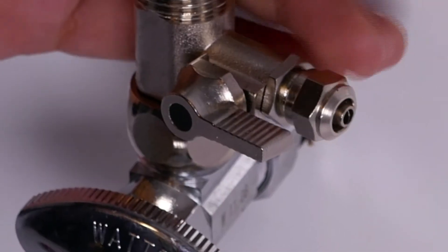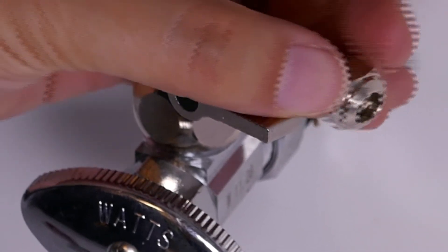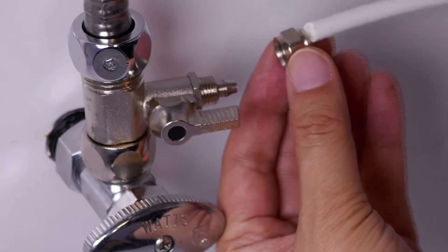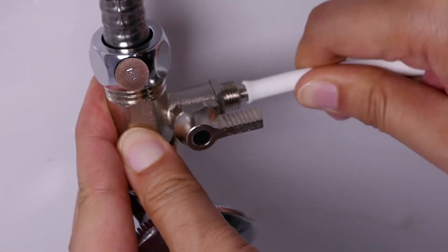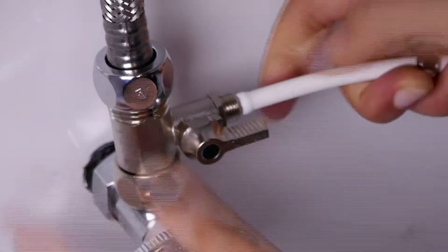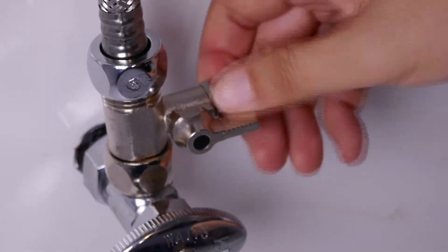Remove the nut from the adapter. After passing the hose through the nut, connect it by pushing the hose all the way to the adapter. Then you may tighten the nut.